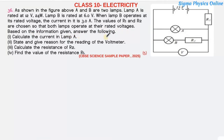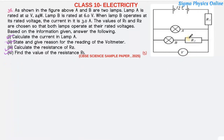The values of R1 and R2 are chosen so that both lamps operate at their rated voltages. Based on the information given, answer the following: the current in lamp A, state and give reason for the reading of the voltmeter, calculate the resistance of R2, and find the value of resistance R1.